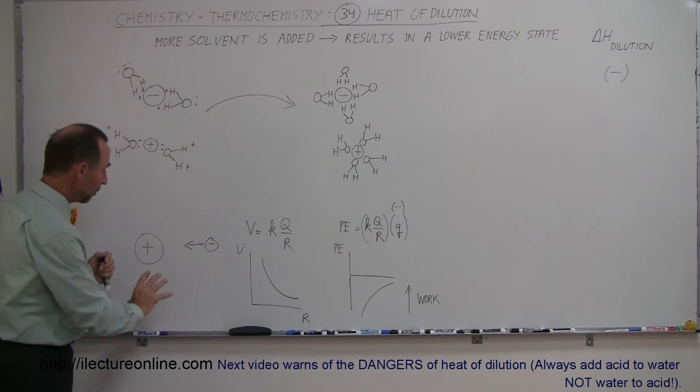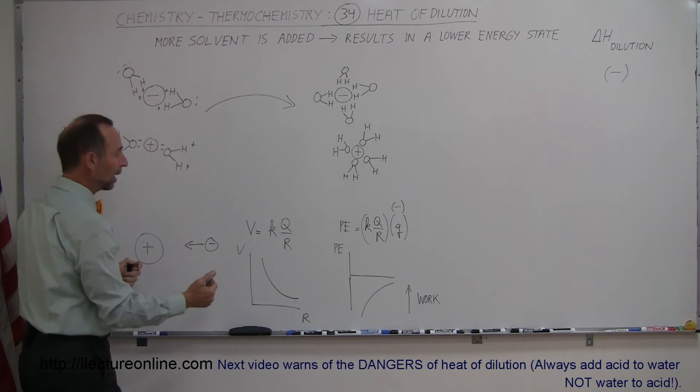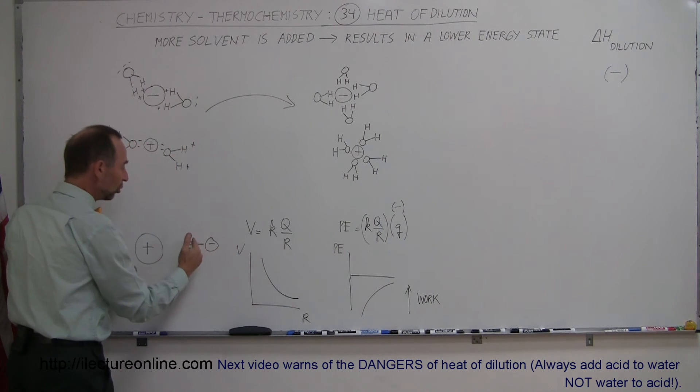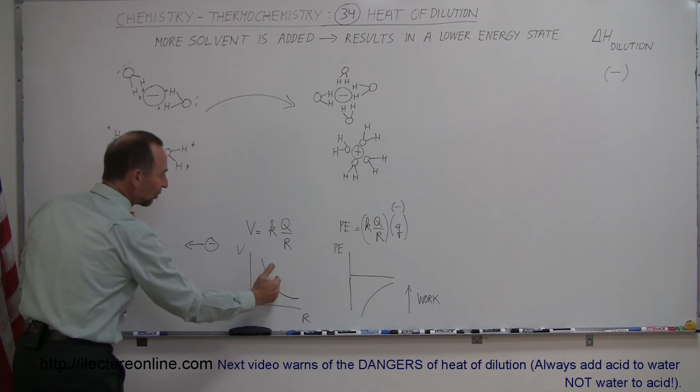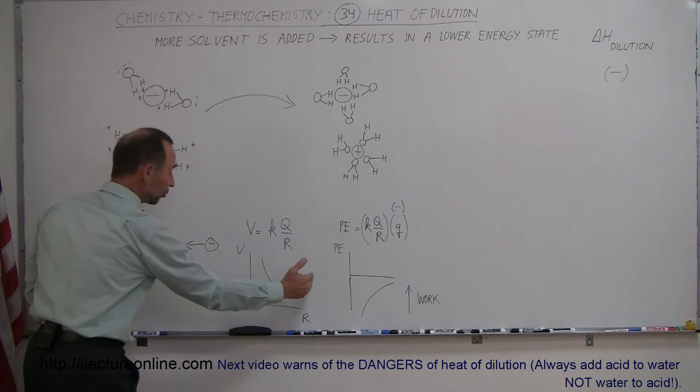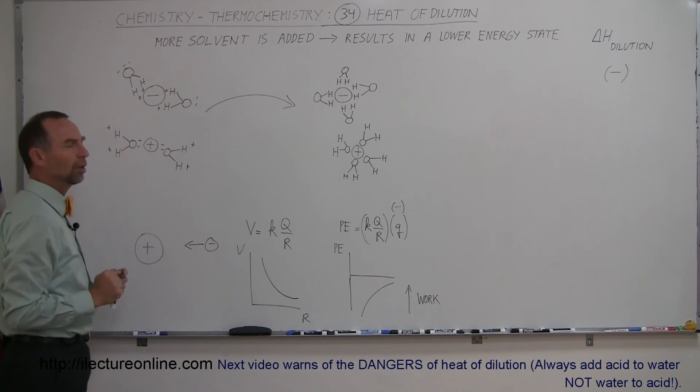Now the positive charge has an electric field around it, and so that means that the potential, the electrical potential, around this charge increases as you get closer to it. So the closer you get to a positive charge, the greater the electrical potential. Now the potential energy is equal to the potential times the charge that you bring in closer.